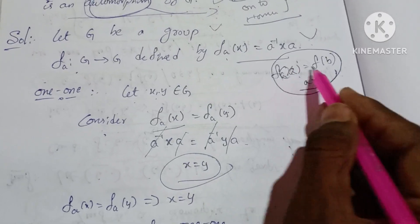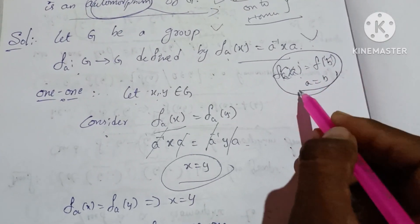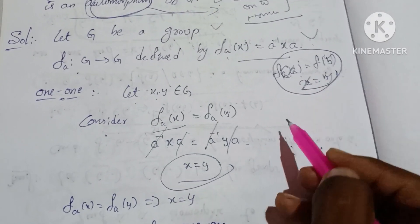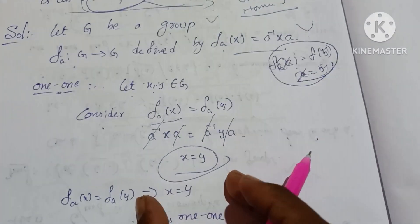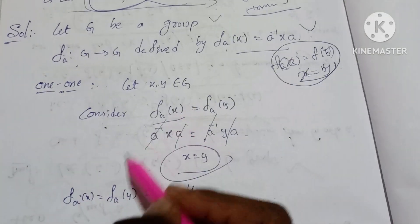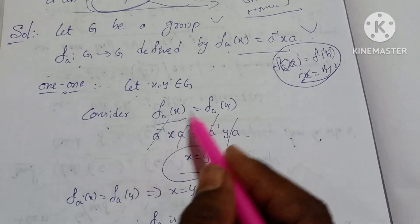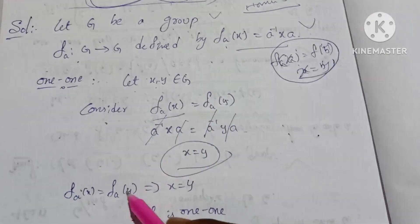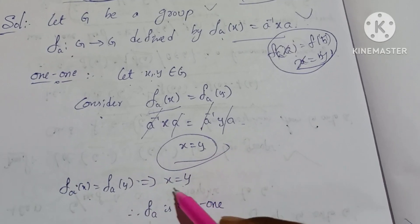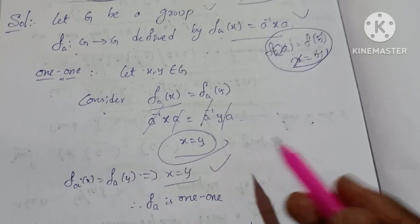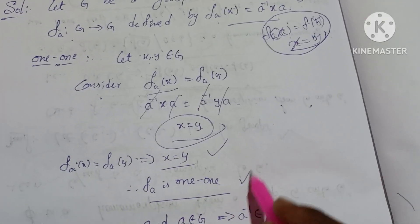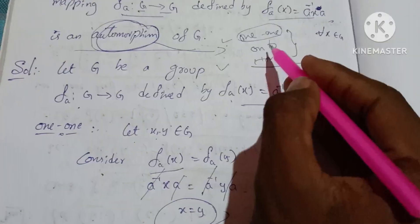Therefore x equals y, so f_a(x) equal to f_a(y) implies x equal to y. Therefore f_a is one-to-one.